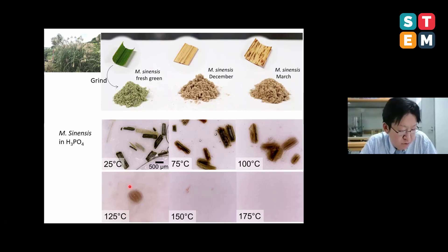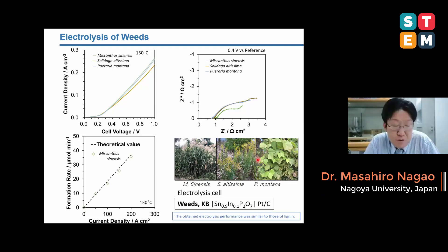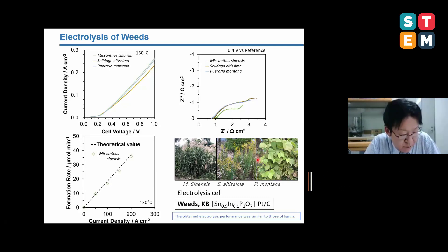We next used Miscanthus sinensis as the example of leaf. The leaf of Miscanthus sinensis was ground into powder and dissolved in phosphoric acid. You can see that the leaves are melting according to the temperatures. In addition to Miscanthus sinensis, we compared two other plants: Seitaka-Awadachisou and Kuzu in Japanese. The obtained electrolysis performance were similar to those of lignin. From these results, we can produce hydrogen from weeds in this electrochemical cell.